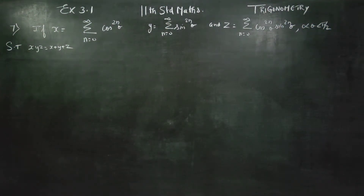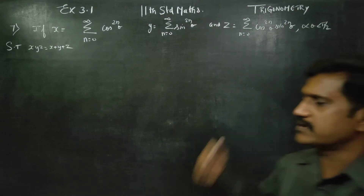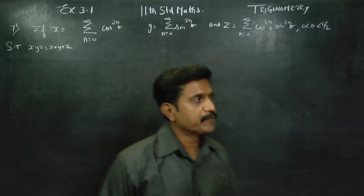Hello 11th Standard Students. In this problem, X is number 3.1, sum number 7. If X is equal to, Y is equal to, Z is equal to — these 3 terms are given.